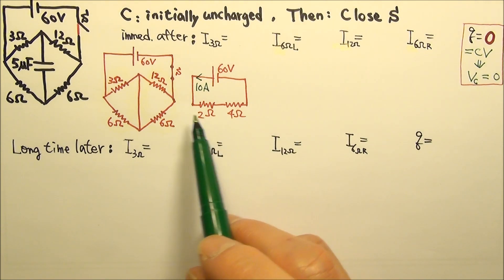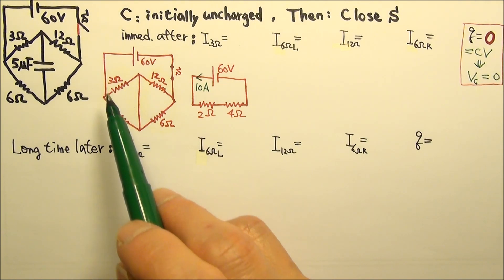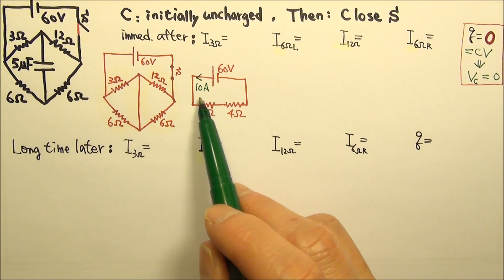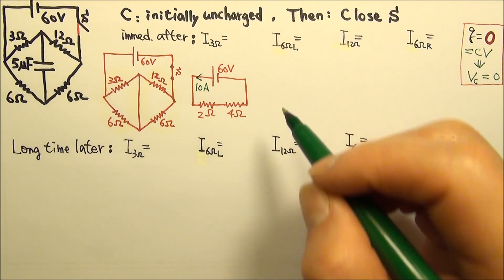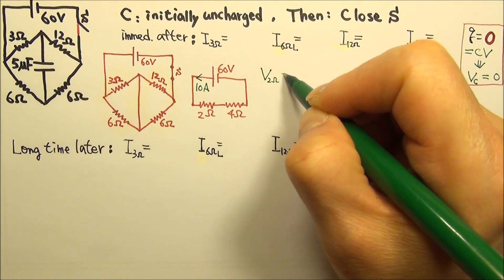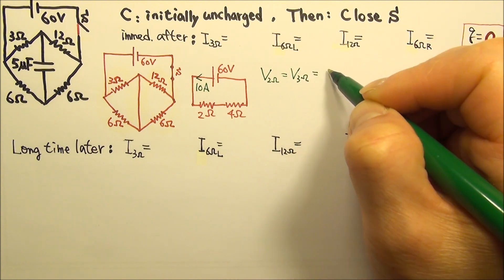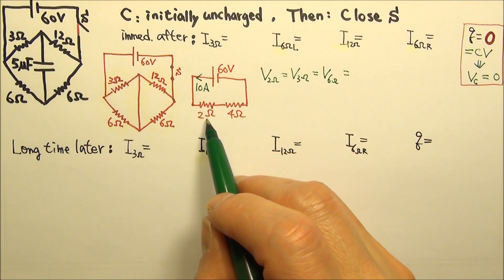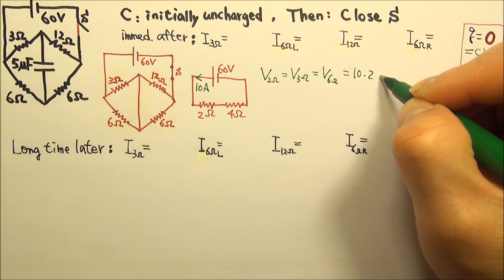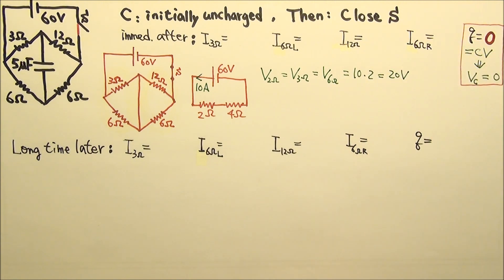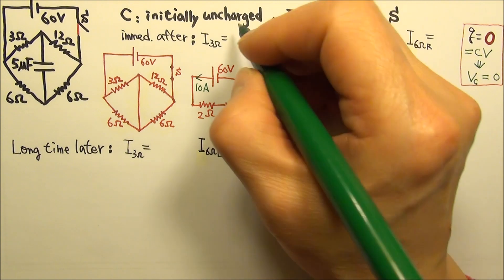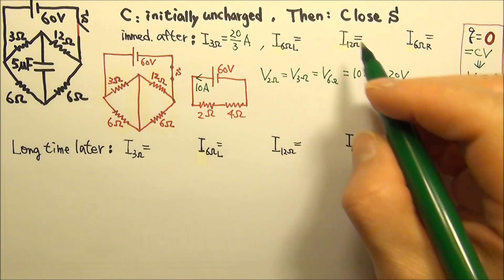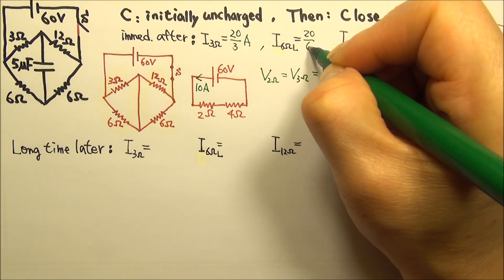The 2Ω is really 3Ω and 6Ω in parallel. Since they are in parallel, they get the same voltage as their equivalent. The voltage across the 2Ω is 10 times 2 = 20 volts. So the 3Ω gets 20 volts, meaning the current is 20 divided by 3. The 6Ω also gets 20 volts, so the current is 20 divided by 6.